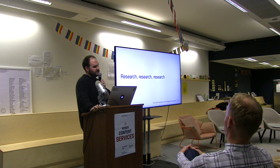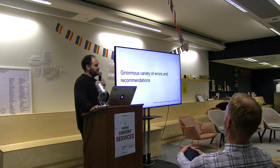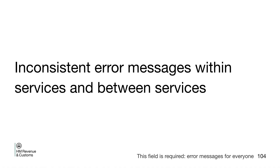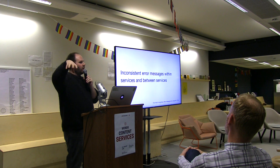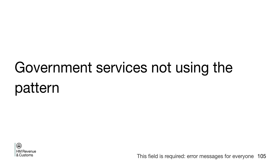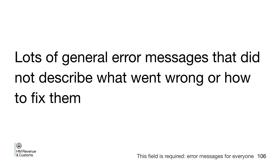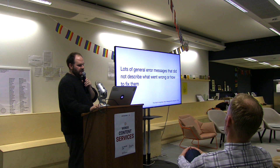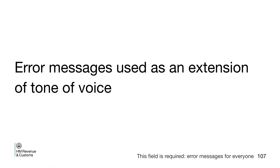But everything you found could be summarised in a few slides. There was such a ginormous variety of errors and recommendations, and loads of inconsistencies within services and between services — it was quite marked how different they were. There were government services not using the pattern, lots of general error messages that didn't really help anyone — things like 'an error has occurred' and 'this field is required.' And a lot of private services use error messages as an extension of their tone of voice, which is a bit weird.